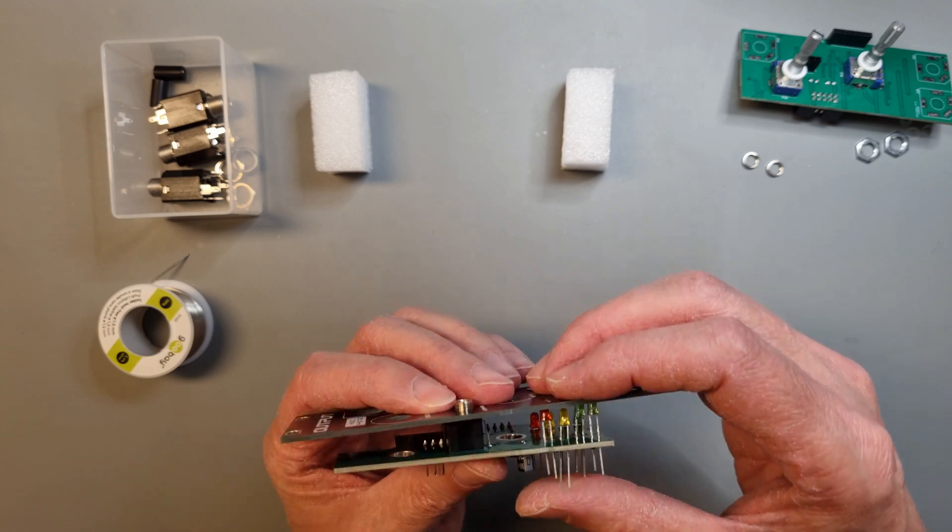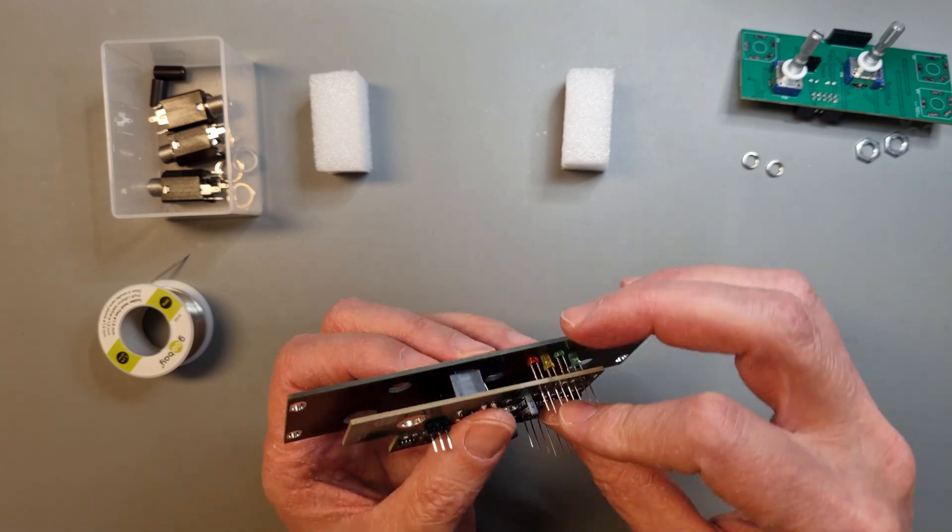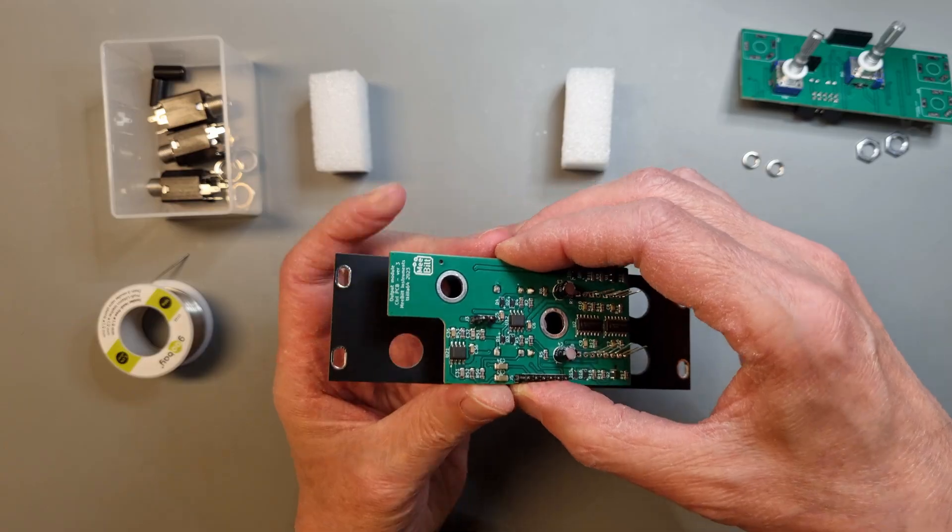Use the front panel to set the height of the LEDs. They should rest at the inside of the panel. Solder the legs after double checking the alignment.